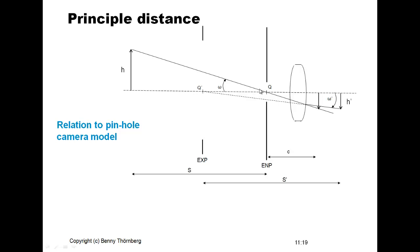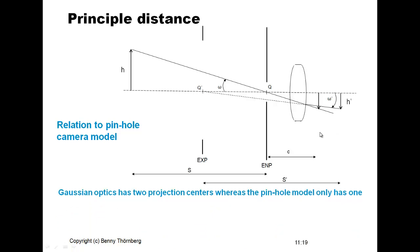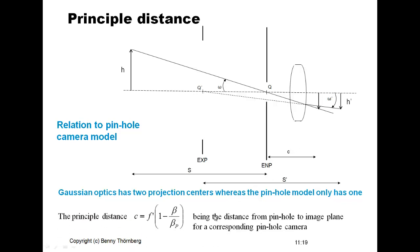If we assume that the projection center Q is the same as for the pinhole camera model, the question arises: at what distance C from this entry projection center should we place the projection focal plane to obtain the same image height H'? We should be aware that Gaussian optics has two projection centers, whereas the pinhole model has only one. This principal distance C is given by a specific formula.